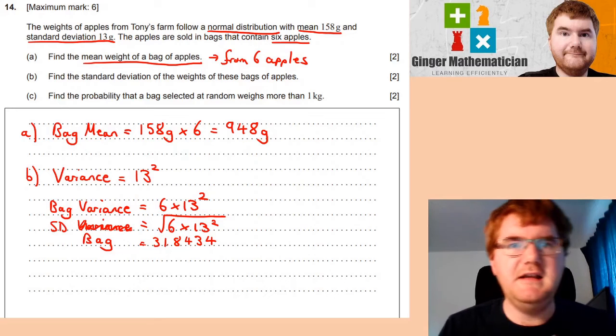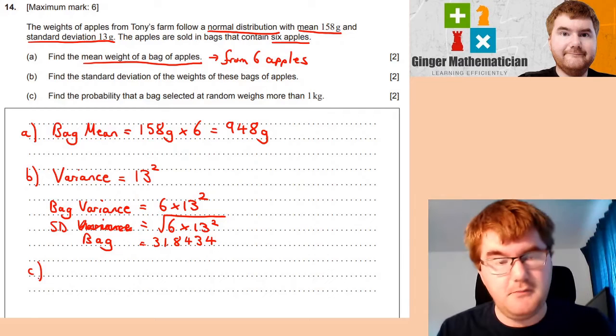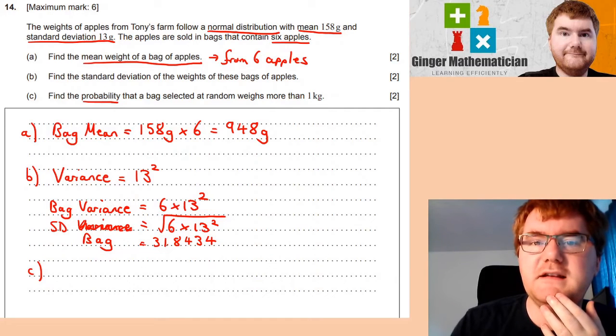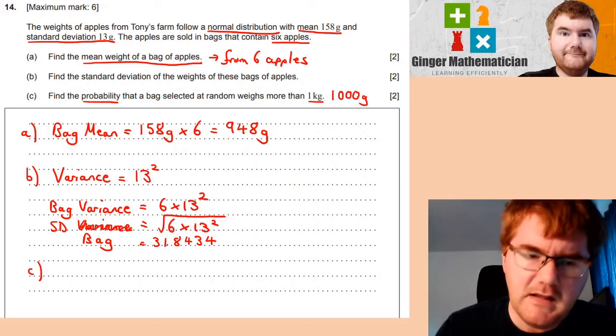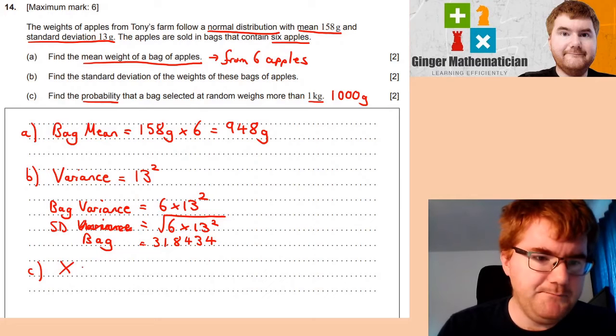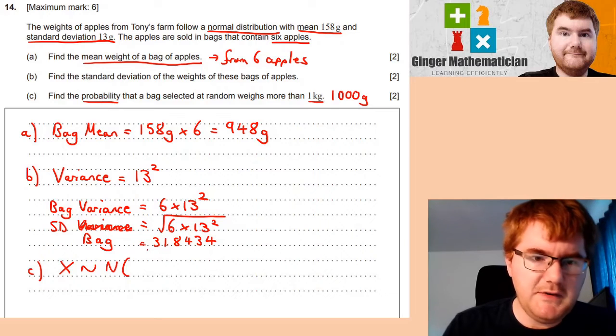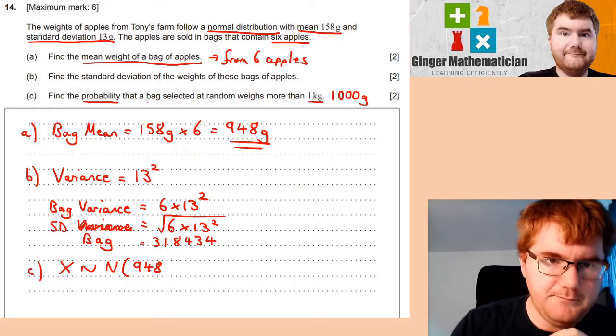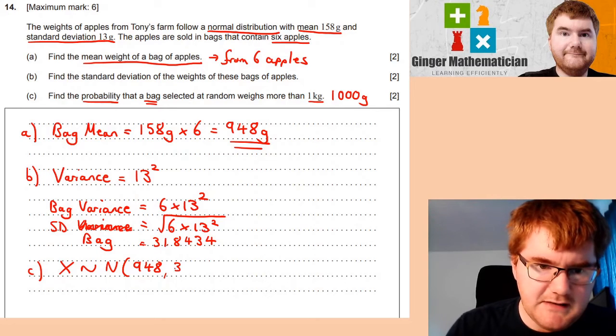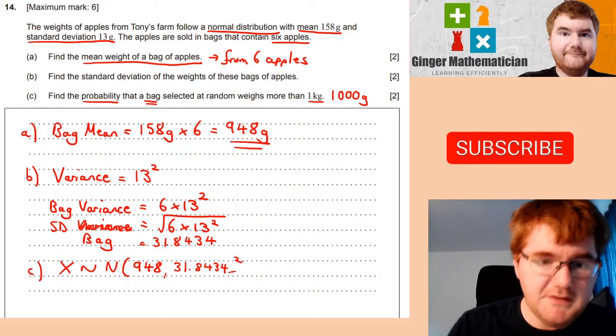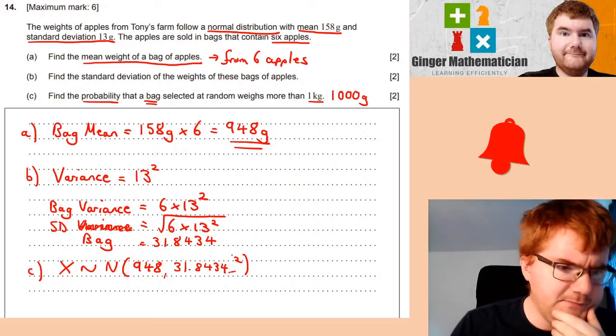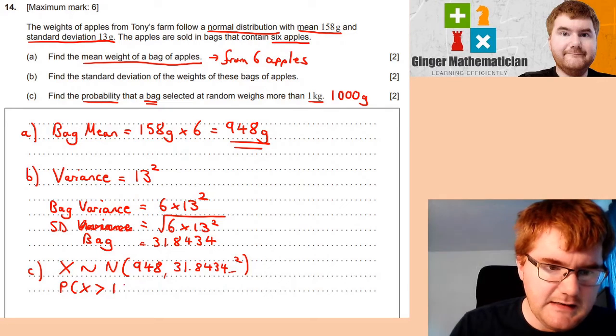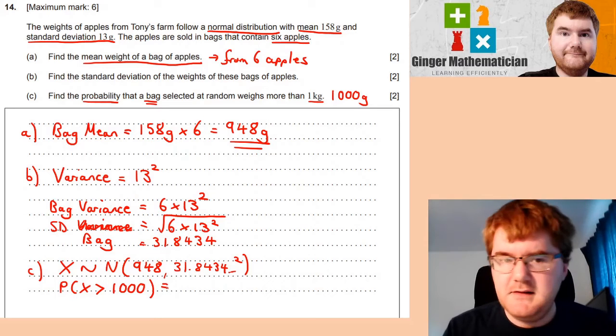What a lot of these IB questions like to do is follow up on what you've done in a subsequent question. So find the probability that a bag selected at random weighs more than one kilo. Remember, one kilo is 1000 grams. So we want to set up our normal distribution here. Our variable is the normal distribution. We need to write the mean, which is 948, and our variance, which is 31.8434 squared, because we're looking for the variance within our normal distribution. We need the probability that x is greater than 1000. So I'm writing everything very clearly.